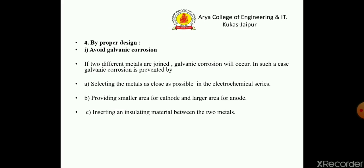Next is by proper design. The first point is to avoid galvanic corrosion. This can be done by the following methods: selecting metals as close as possible in the electrochemical series; providing a smaller area for the cathode and a large area for the anode; and inserting insulating material between the two metals. From these, we can avoid galvanic corrosion.